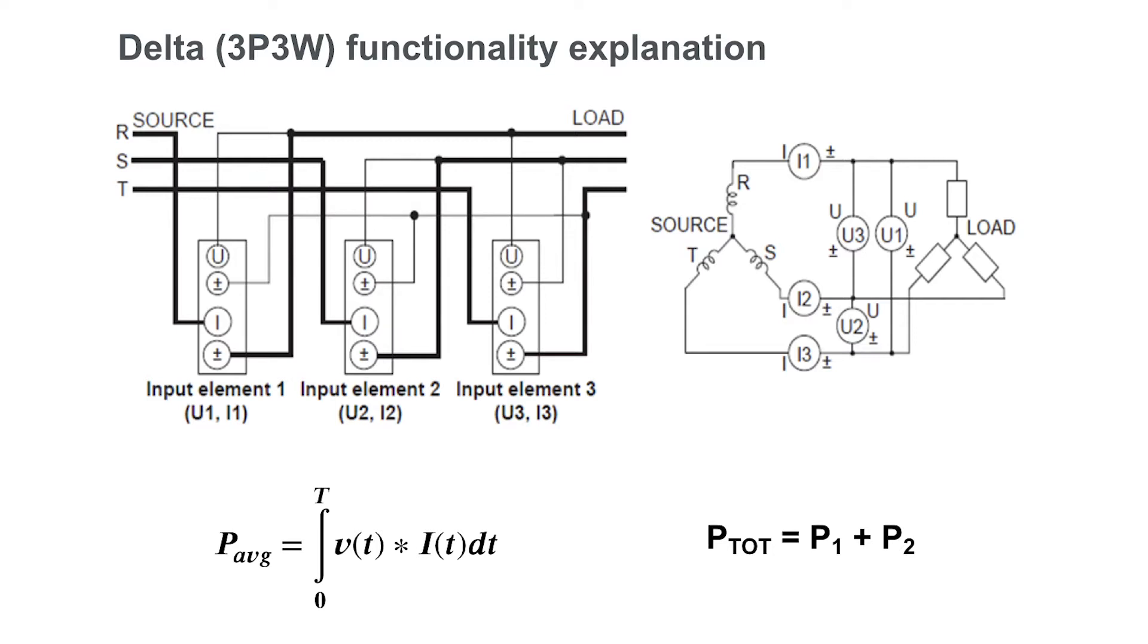However, by using KVL, KCL, and Blondel's theorem, the total power for the system can still be accurately measured by summing only two of the wattmeters. In this configuration, P1 and P2 are the wattmeters that will be summed to calculate sigma P.